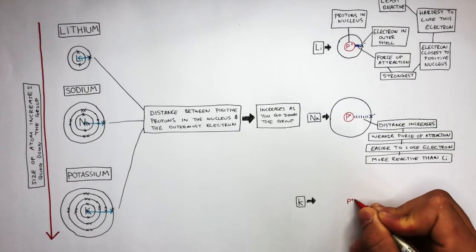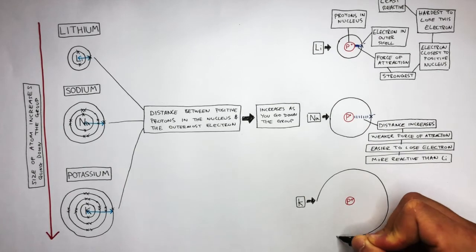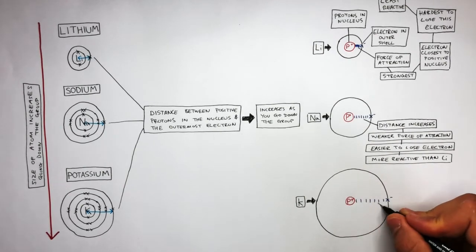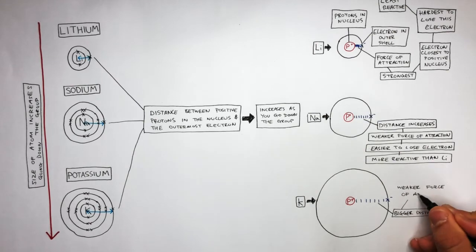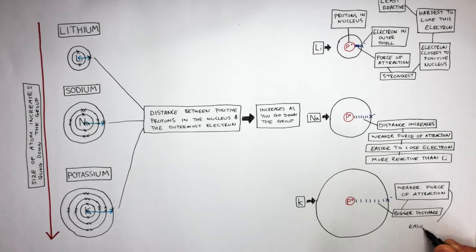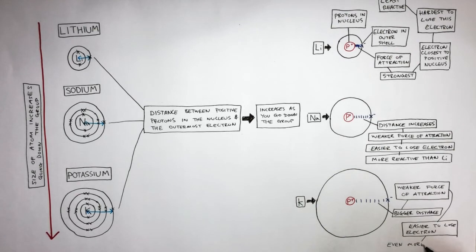Here I'm drawing potassium which is the biggest atom of the three. Compared to lithium and sodium there's an even bigger distance resulting in a weaker force of attraction. This makes it even easier to lose the outermost electron. Potassium is even more reactive.